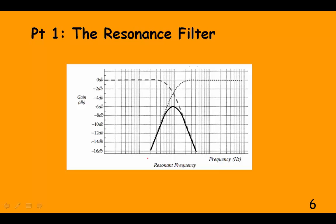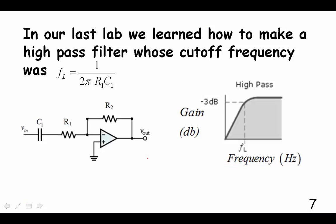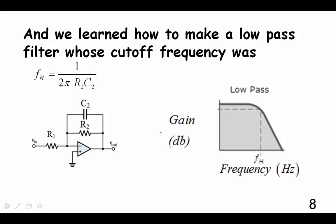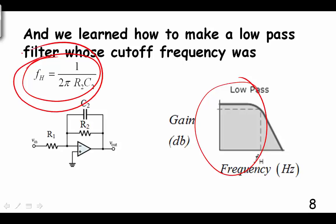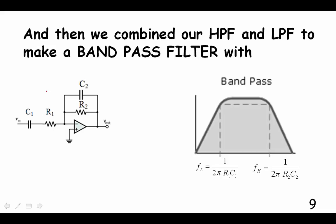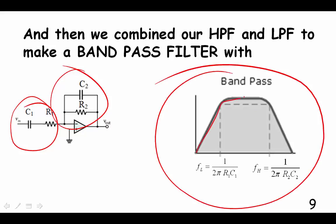Here's the Bode diagram for a resonance filter. In our last lab, we learned how to make a high-pass filter whose cutoff frequency was this, where you get minus 3 dB gain on your output. We learned how to make a low-pass filter, allowing low frequencies to come through, using the same equation for cutoff frequency. Then we combined our high-pass filter with the low-pass filter and got a band-pass filter.